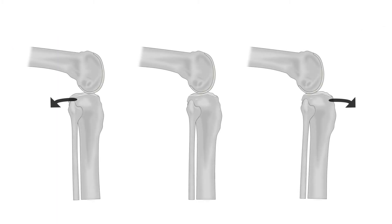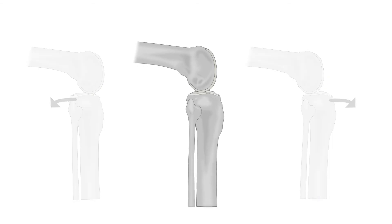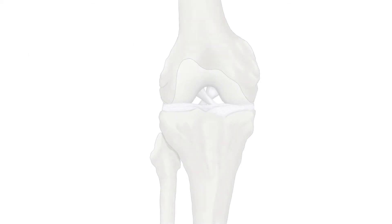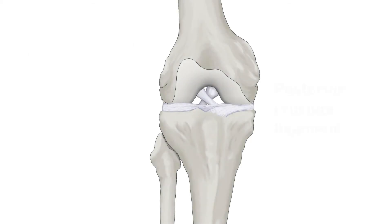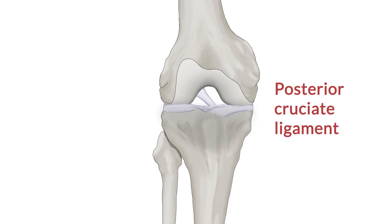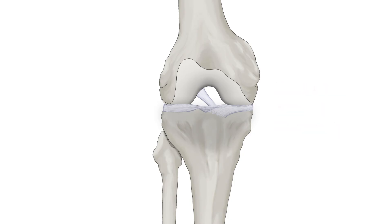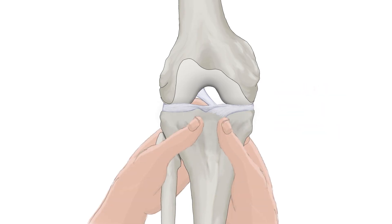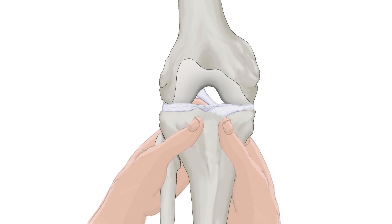Always start the examination with the lower leg in a neutral position to avoid false positive test results. For example, if the PCL is insufficient, the lower leg might be displaced posteriorly at the beginning of the test. Performing the anterior drawer test from this position would then result in significant anterior movement even though the ACL could be intact, and the examiner may wrongly conclude the test is positive.